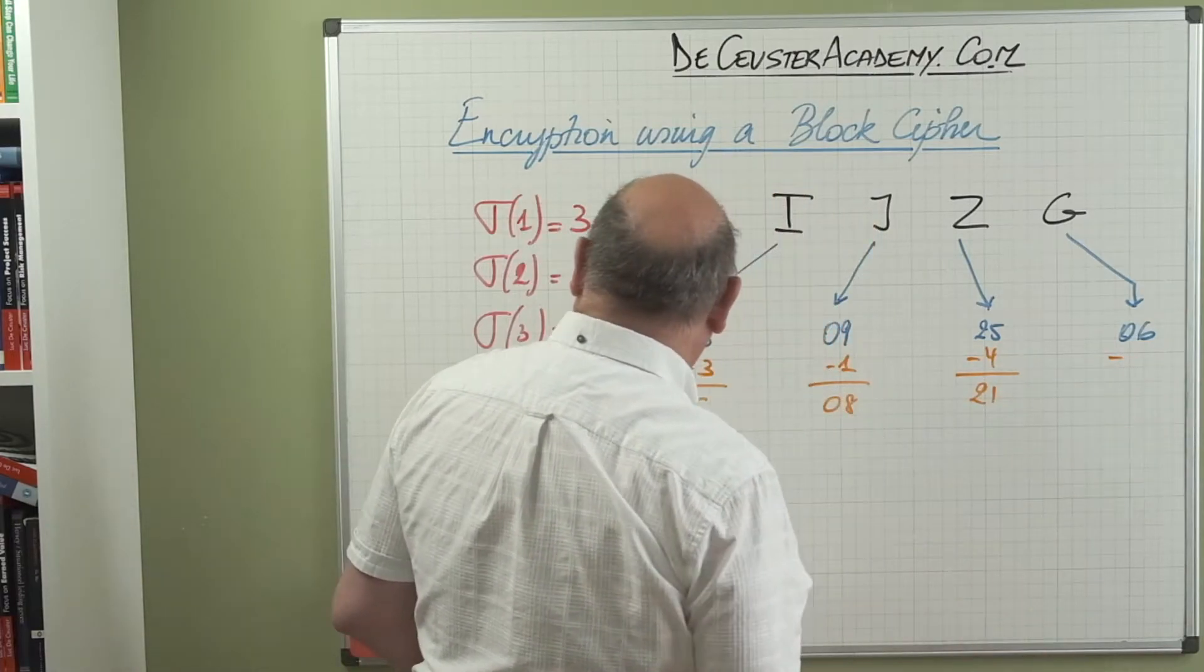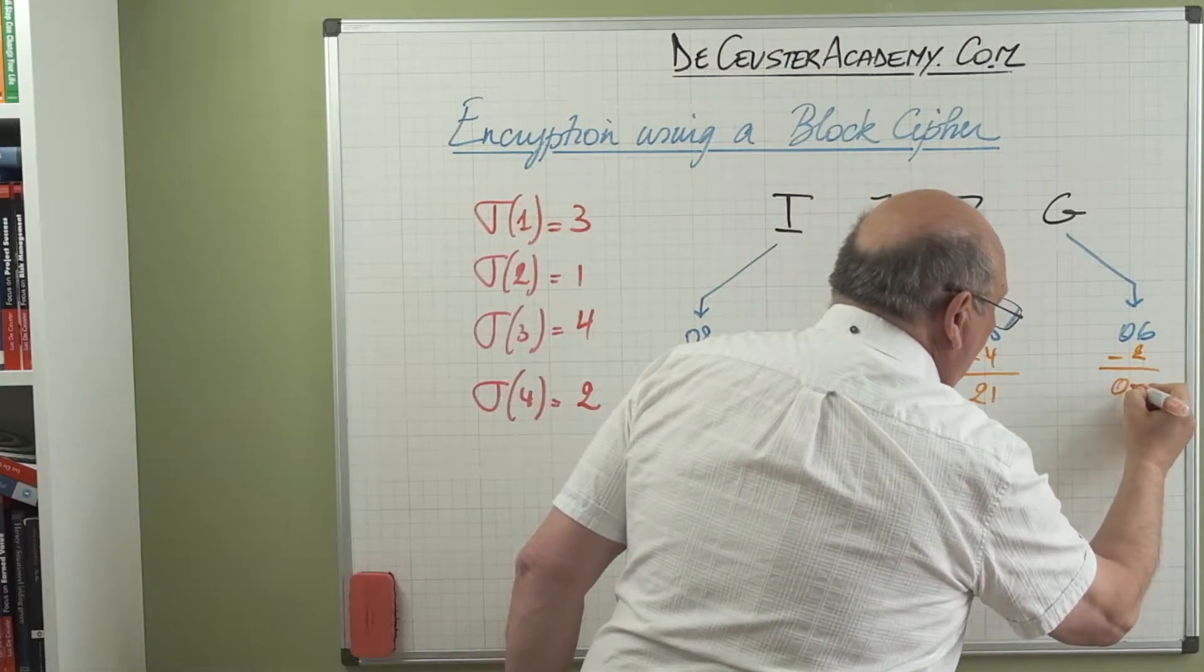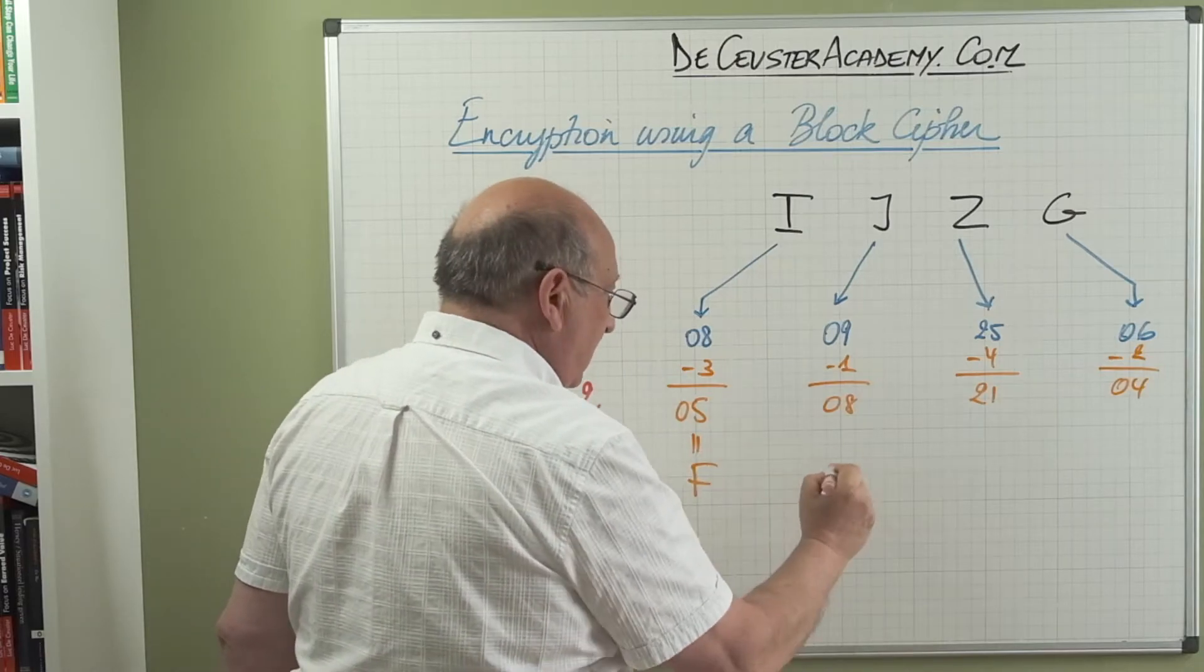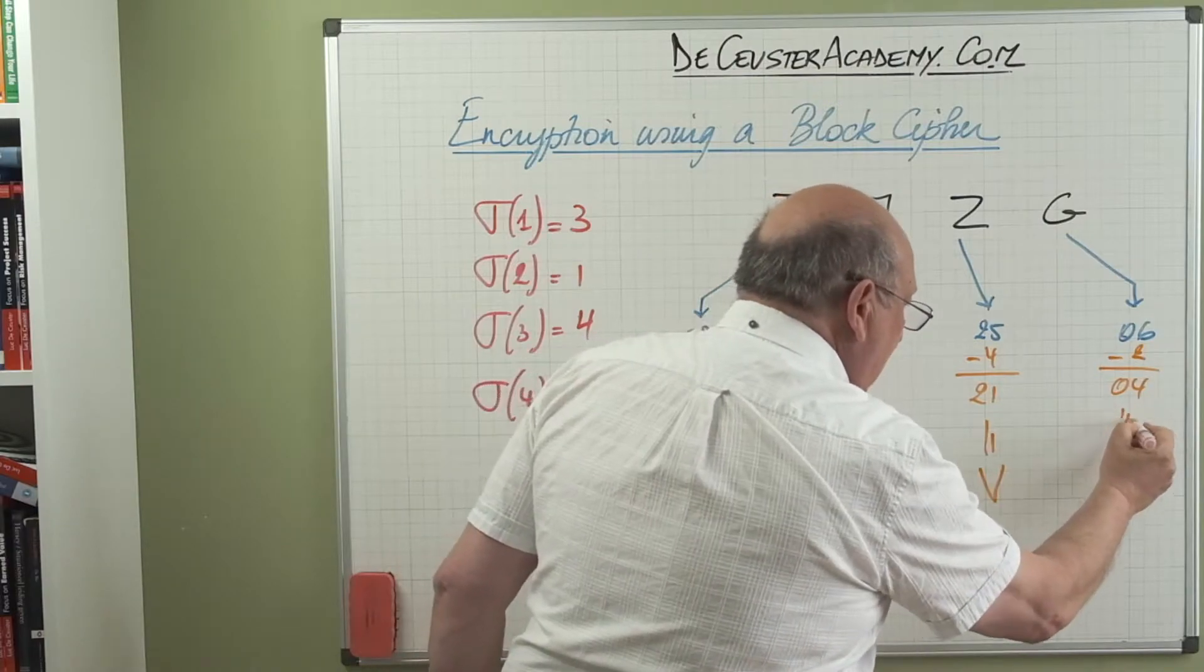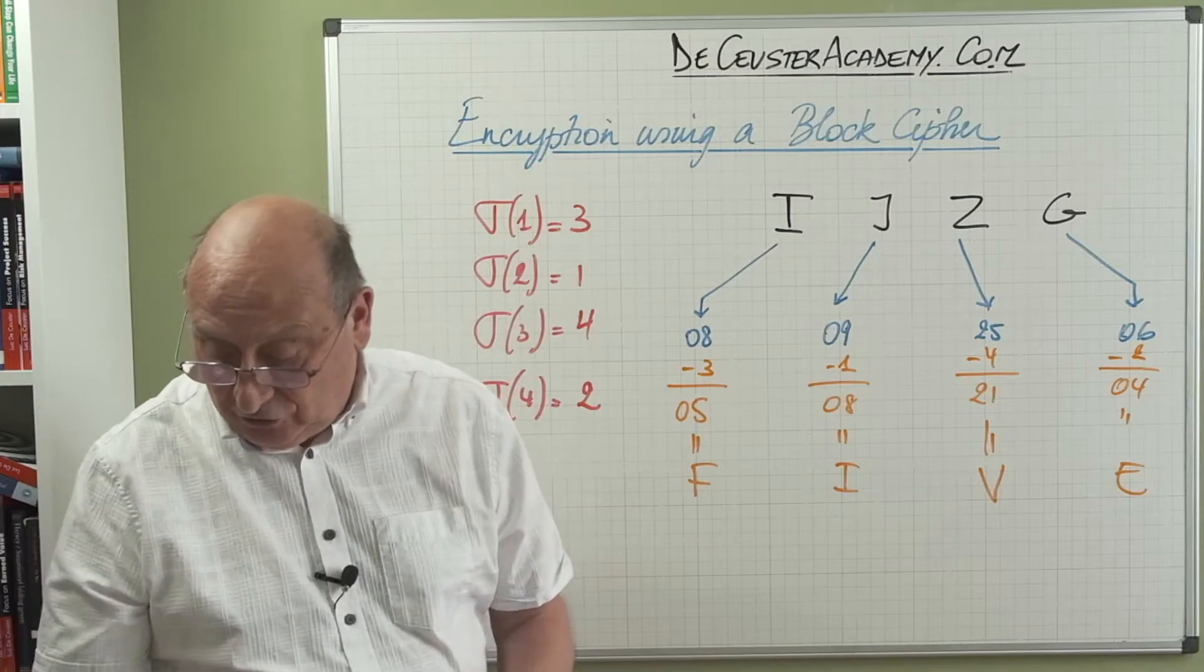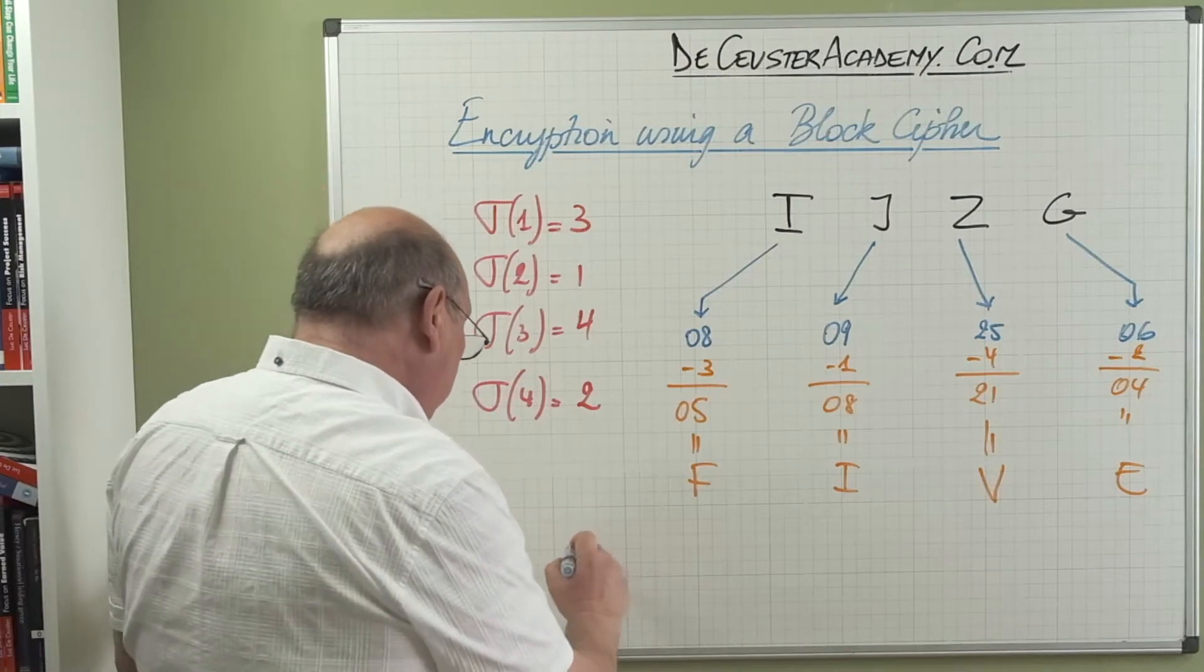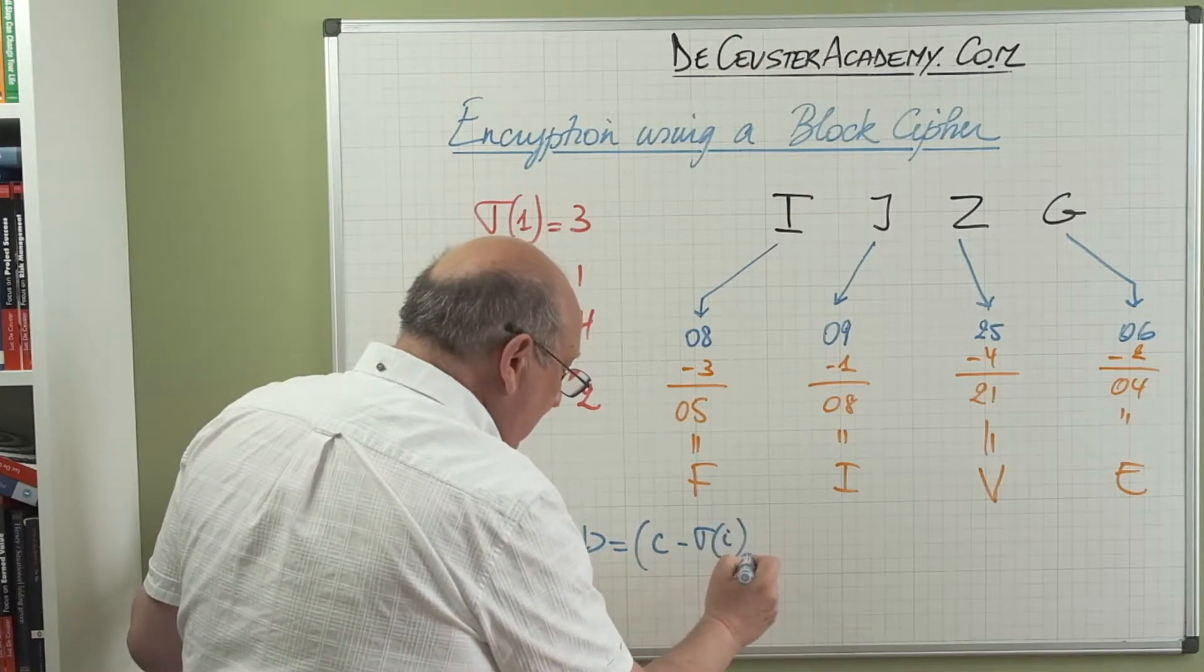And we can say this is F, this is I, this is V, and this is E. So I basically found the same word again, FIVE. We can write this as P is now C minus sigma_I modulus 26, and the same thing we have for sigma_I. It depends what is the value: three, one, four, and two, depending on the position of the letter in the word.